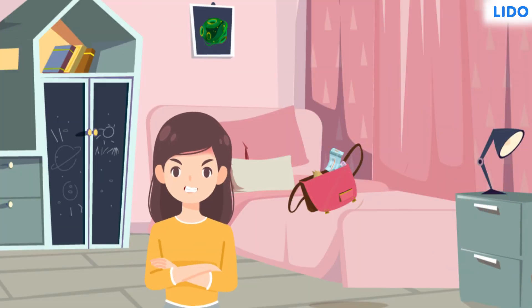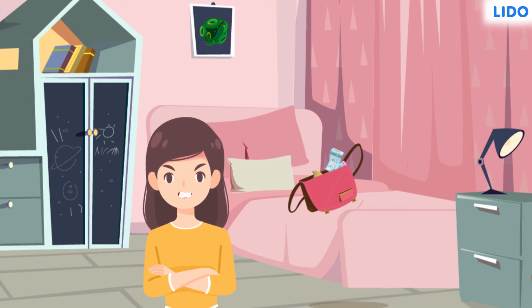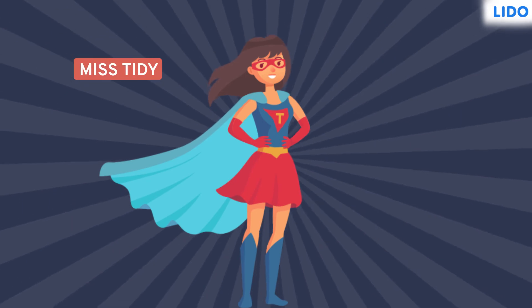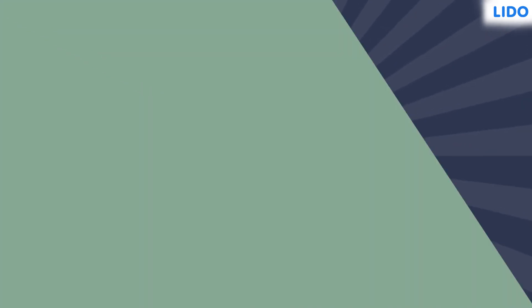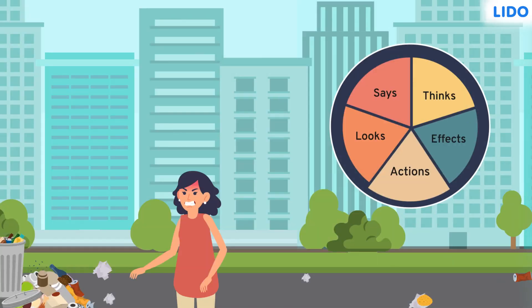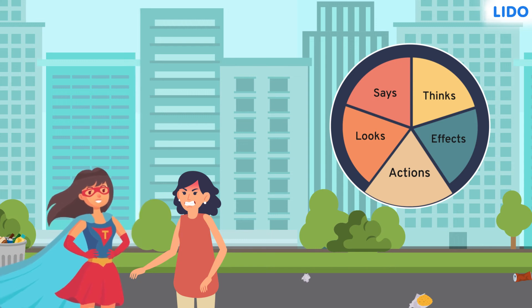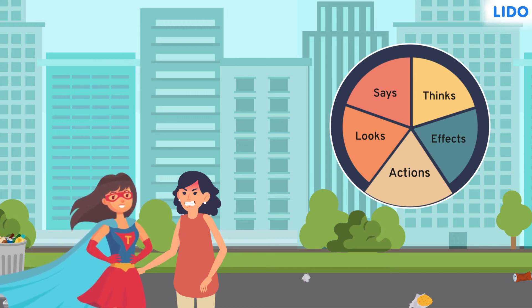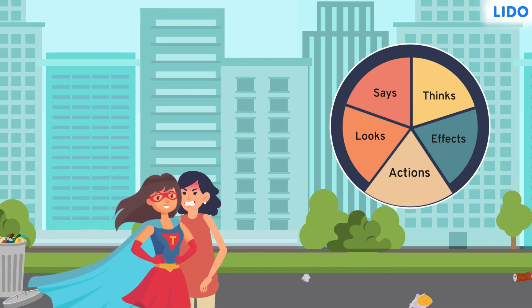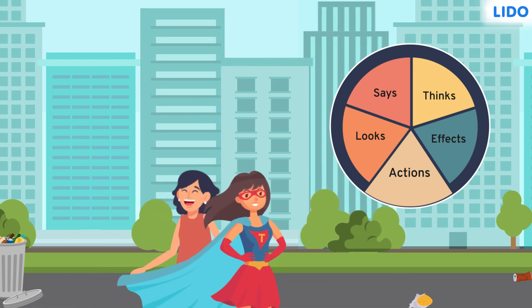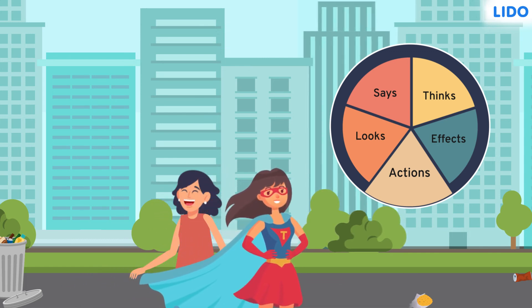Shazia is angry about the neighbour's words and decides to become a superhero. She becomes Miss T, where T stands for tidy. Now, Shazia takes matters into her own hands and shows other characters how to not litter. These are her actions as a result of her talking with other characters, her own thoughts, and the effects others have on her.